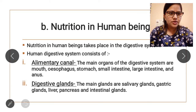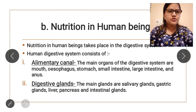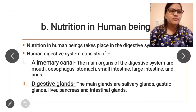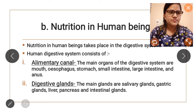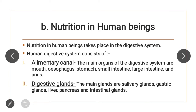Now we will see nutrition in human beings. Nutrition in human beings takes place with the help of the digestive system. The human digestive system consists of two main parts: first, the alimentary canal, and second, the digestive glands, which secrete digestive enzymes.